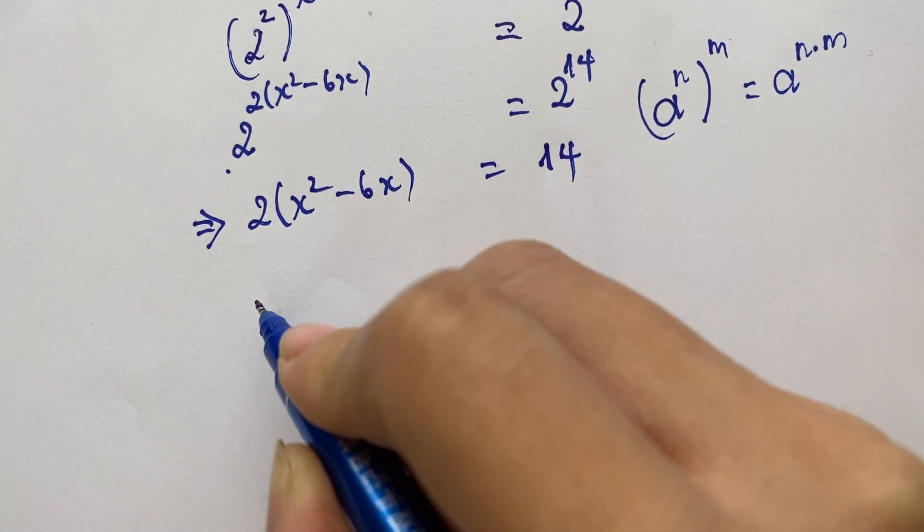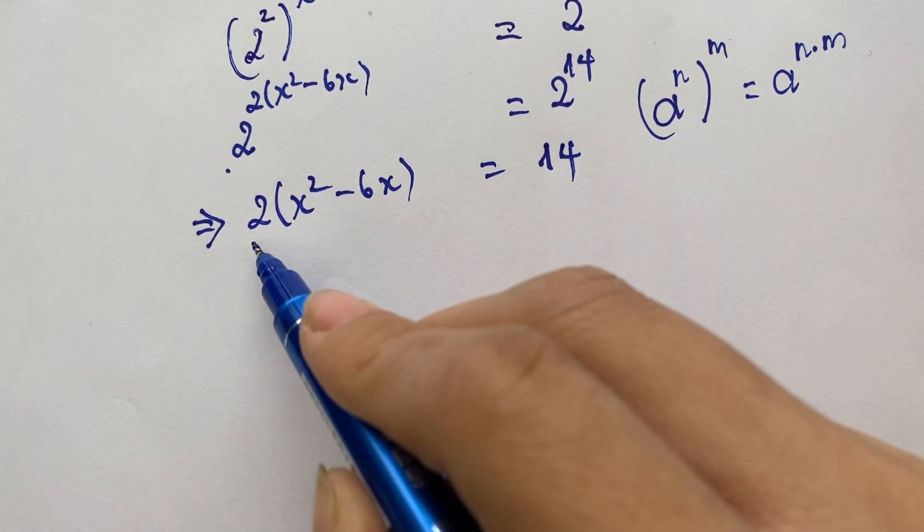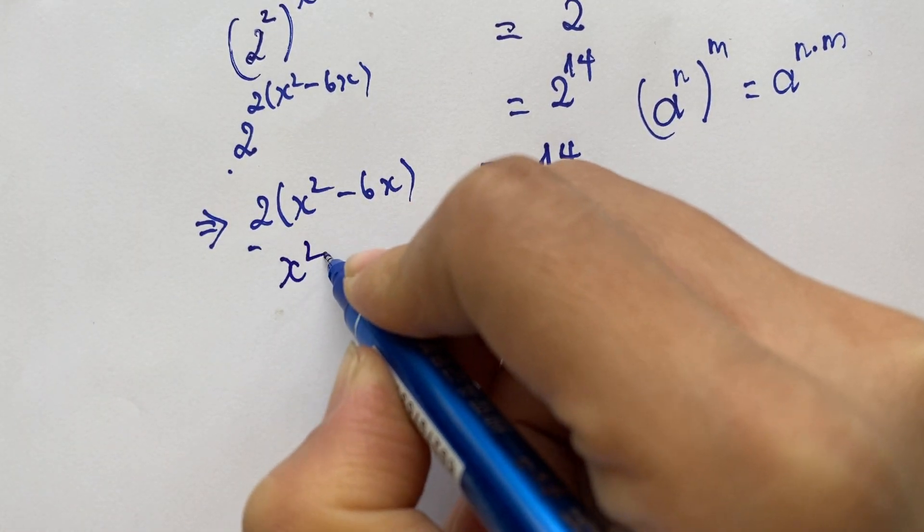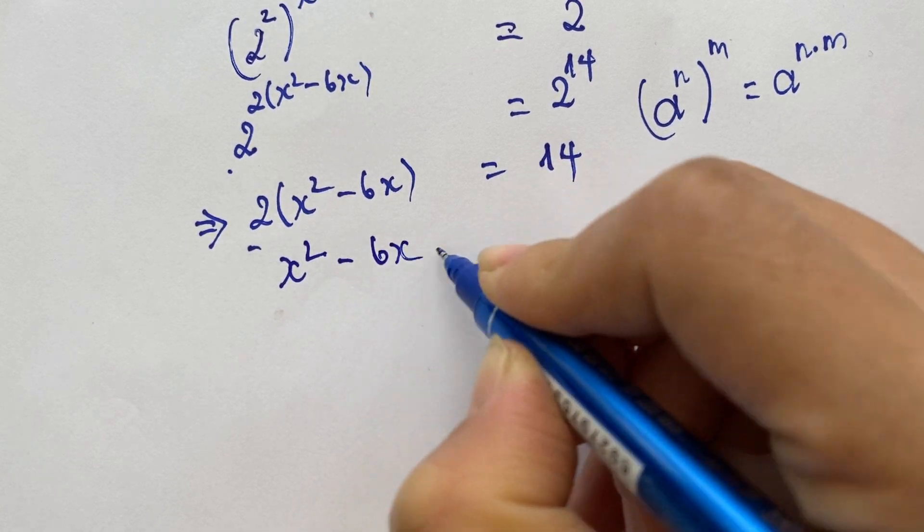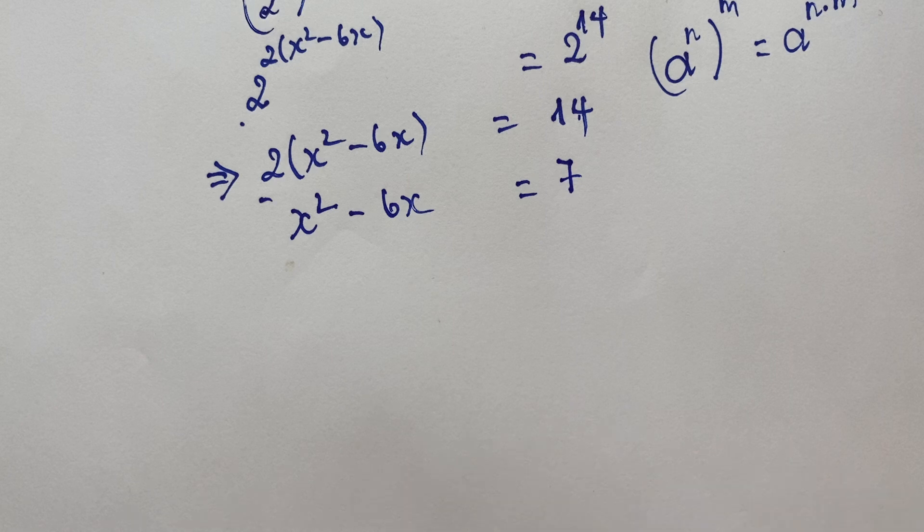Next, cancel 2 from both sides of the equation, so x squared minus 6x equals 7.